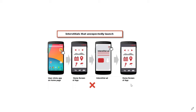Next is interstitial ads that unexpectedly launch. For example, a user clicks the app icon, you show the home screen, the user does not click anything, and then you show an interstitial ad before showing the home screen again. This is a totally unexpected launch — you cannot surprise the user with an interstitial ad, or your account will be limited.